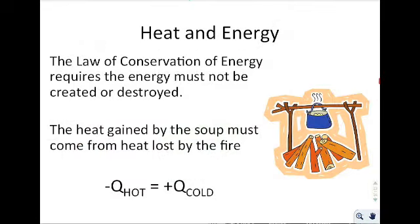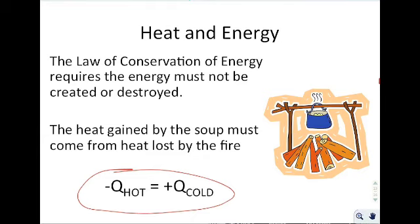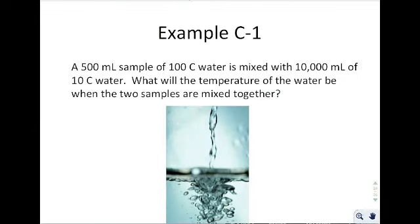Heat and energy: the law of conservation of energy requires that energy cannot be created or destroyed. The heat gained by the cold object must come from the heat lost by the hot object. This gives us the equation: −Q_hot = +Q_cold, meaning energy is transferred from the hot object to the cold object and all that energy must be conserved. This is particularly useful for calorimetry.